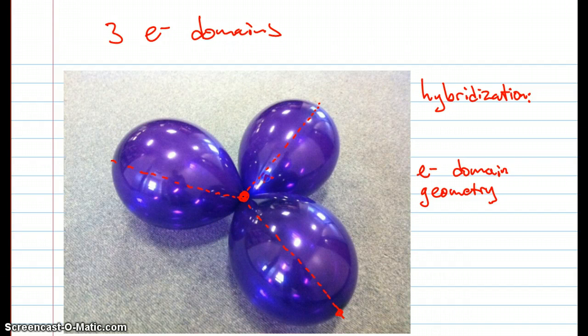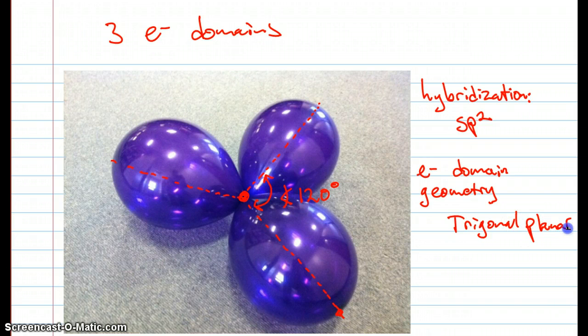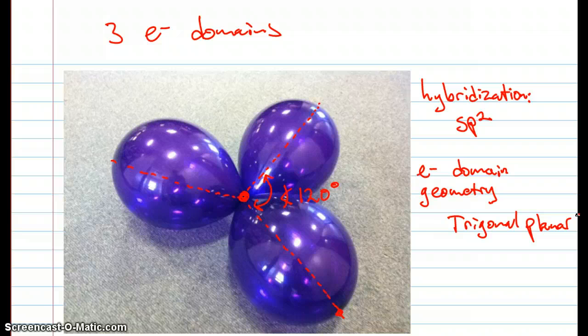The bond angle for all of them is going to be 120 degrees. We call this hybridization SP2, and the electron domain geometry is trigonal planar. Trigonal because the molecule is shaped like a triangle, and planar because all atoms should be in the same plane when you have three electron domains.